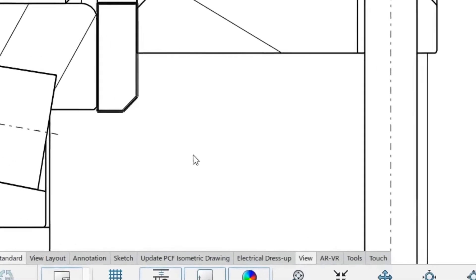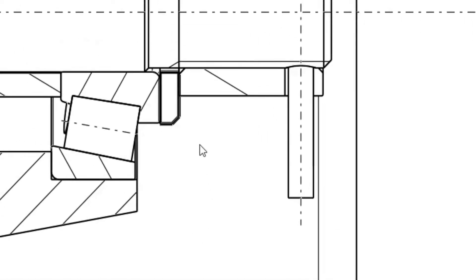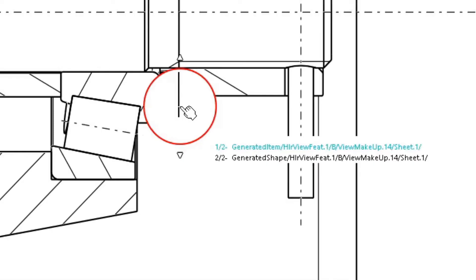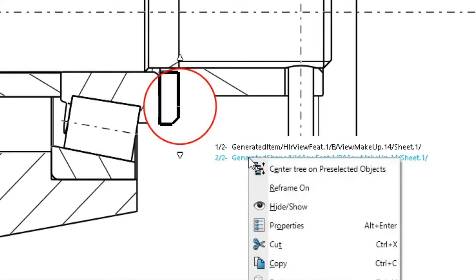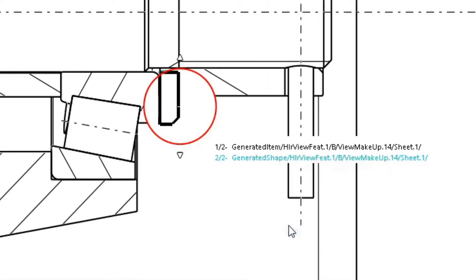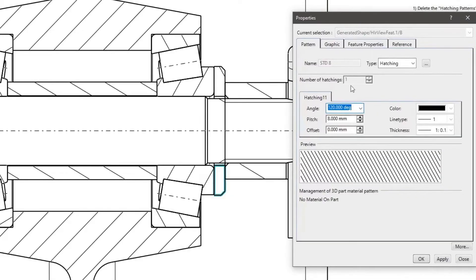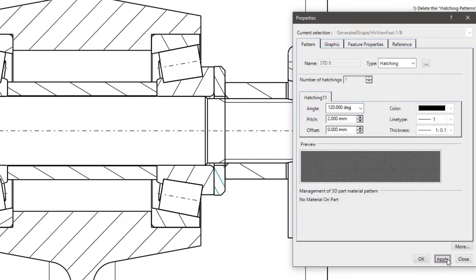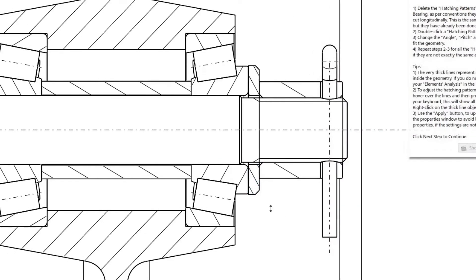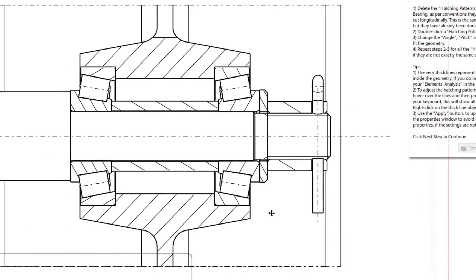To adjust the hatching pattern of the region with thick lines, hover over the lines and then press one of the arrow keys on your keyboard — this will show all the items that can be selected. Right click on the object that highlights the thick line and choose properties. Adjust the patterns for all the parts. Remember that no two hatchings should be the same and that the angles should be chosen in such a way that the hatching can be distinguished the best from the geometry lines.